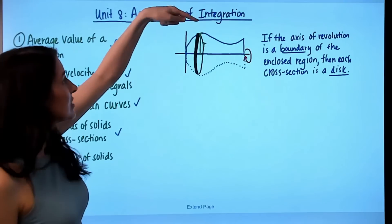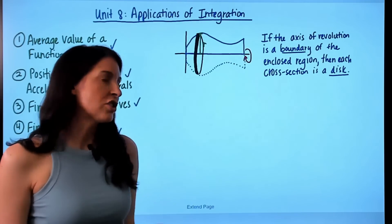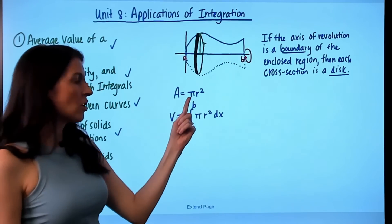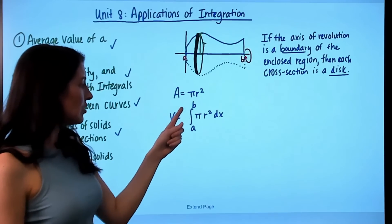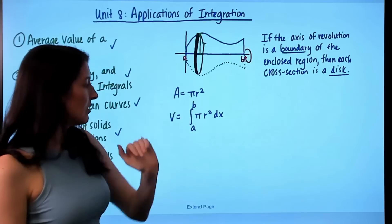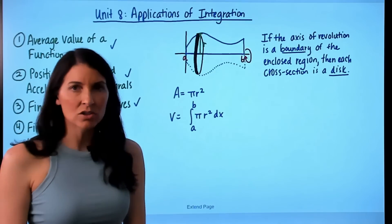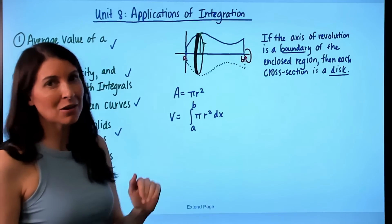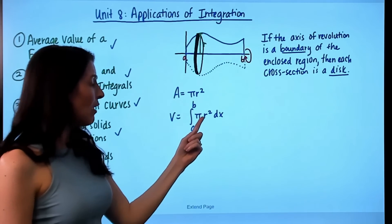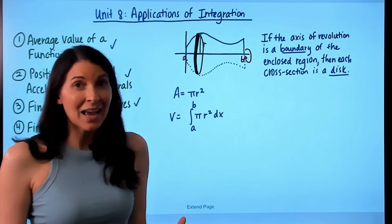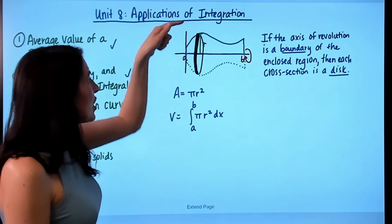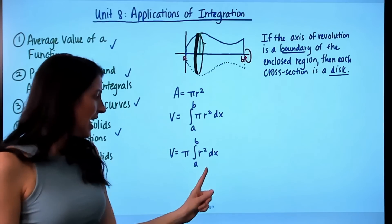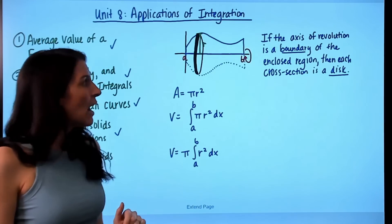To find the volume, set up the integral from a to b — your x values of intersection — with the area of one circle, π times radius squared, and dx, since cross sections are perpendicular to the x-axis. The radius must be written in terms of x; you can use top minus bottom to find it. You can also factor the constant π out in front of the integral.